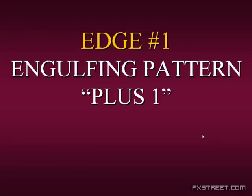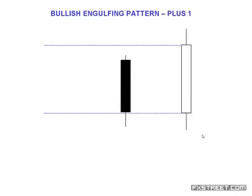Now, we're going to talk about heightening the probabilities for success with engulfing patterns. This is our proprietary technique at Specialist Trading — it's called the engulfing pattern plus one. We incorporate the standard bullish engulfing pattern: an upward day from open to close totally engulfing a downward day from open to close. But with plus one, we are also engulfing the range from open to close of one more bar. The standard bullish engulfing plus one.